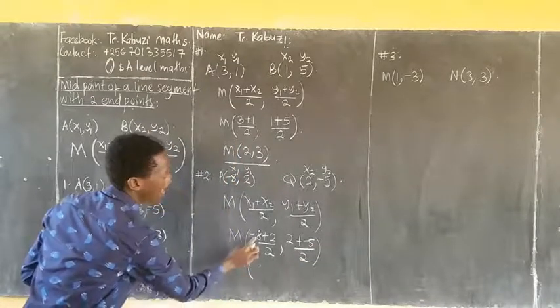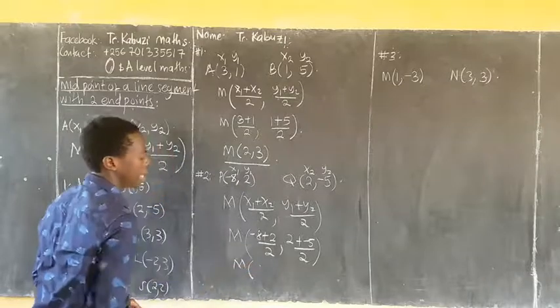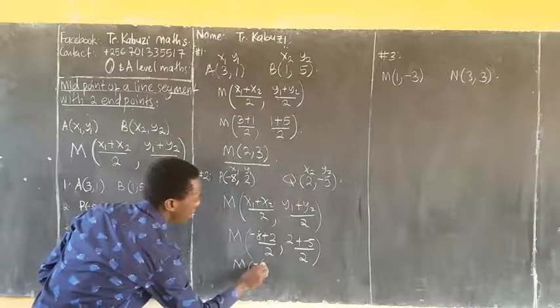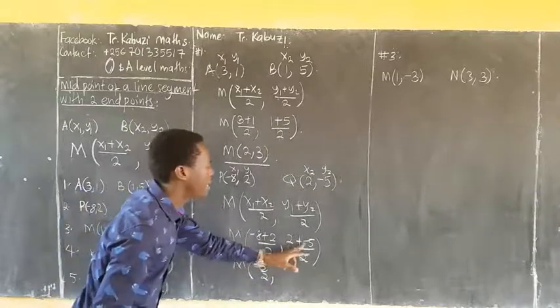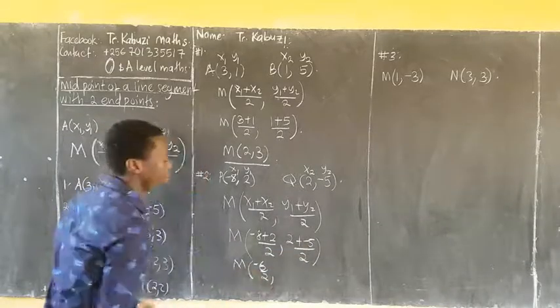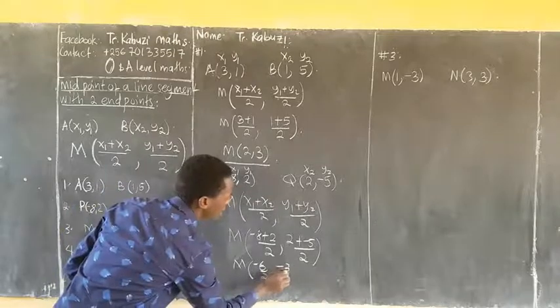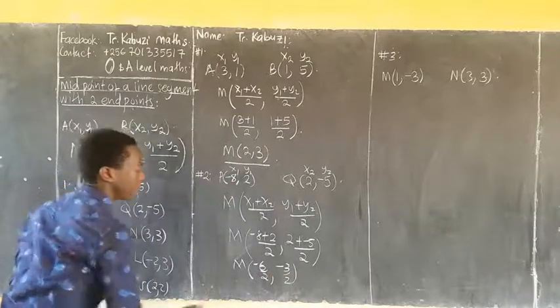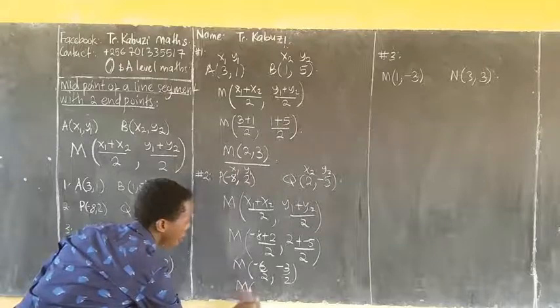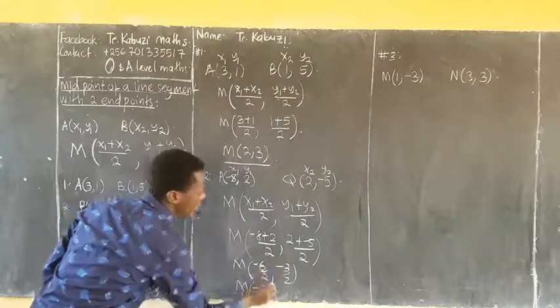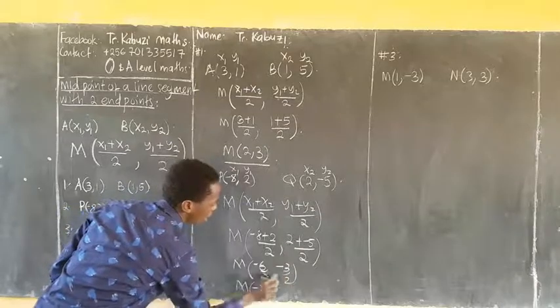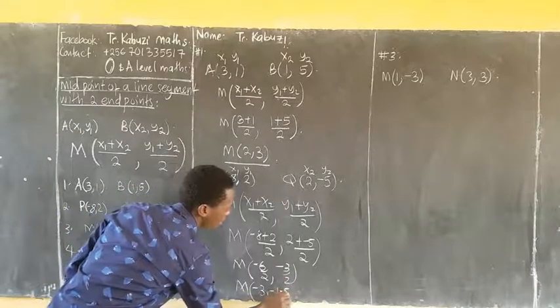Let us see. My midpoint now will be negative 8 plus 2, that's negative 6, divided by 2, comma, 2 plus negative 5, we get negative 3, divided by 2. If you simplify, this is negative 3, comma, we divide negative 3 by 2, we get negative 1.5.